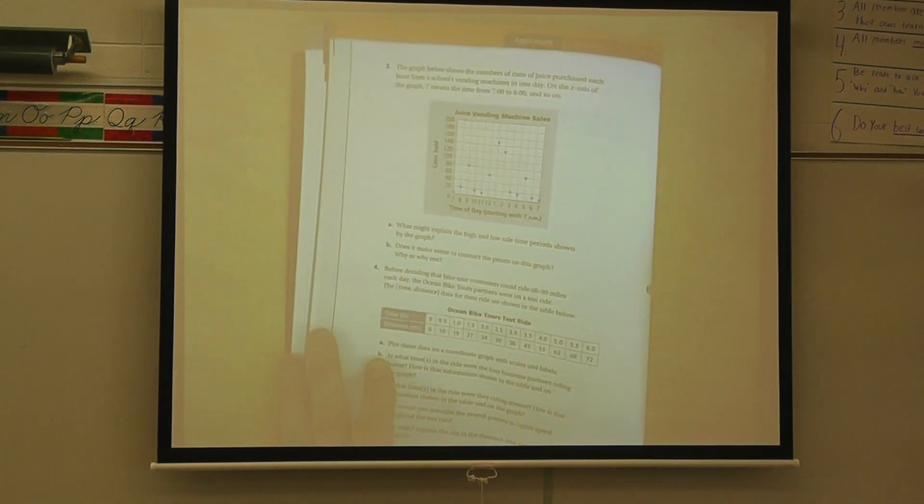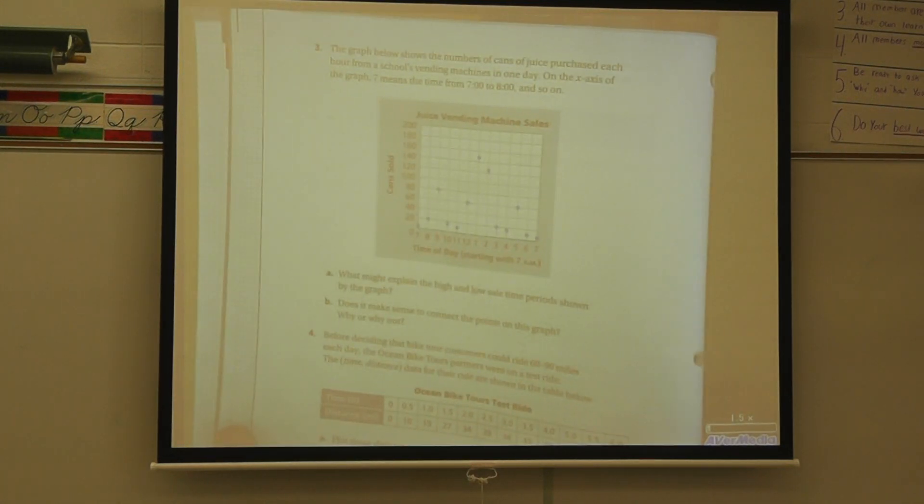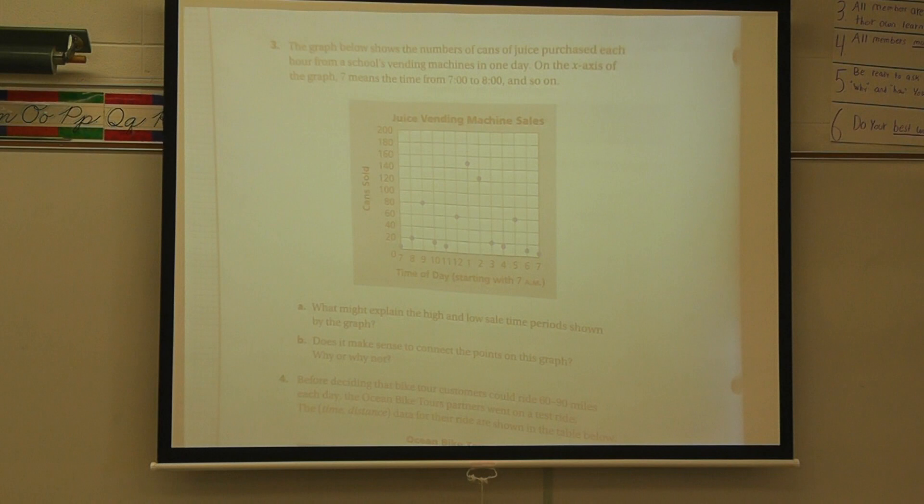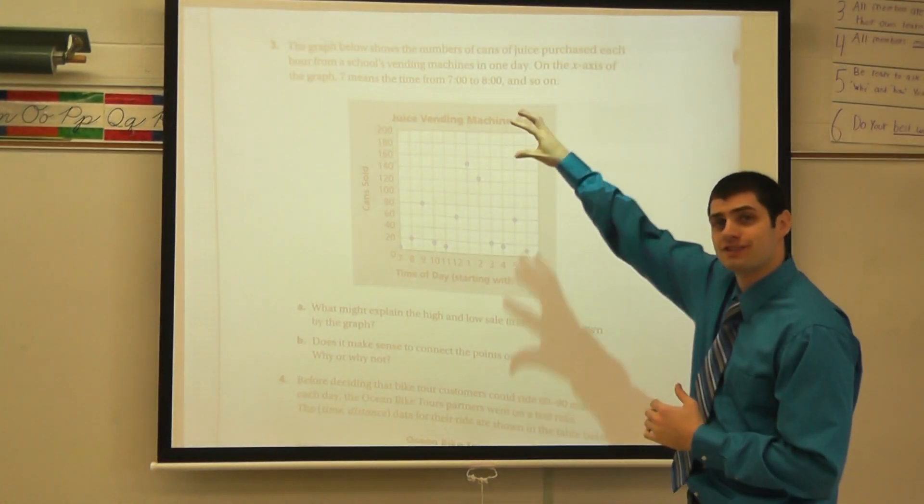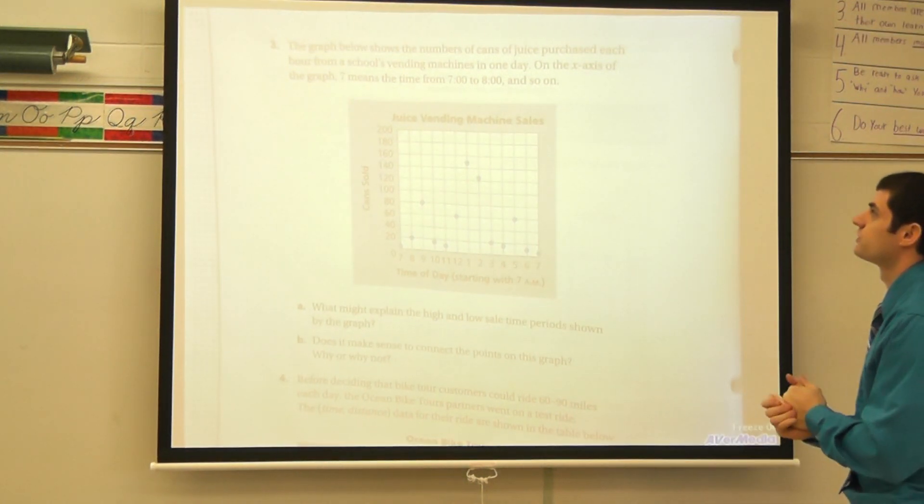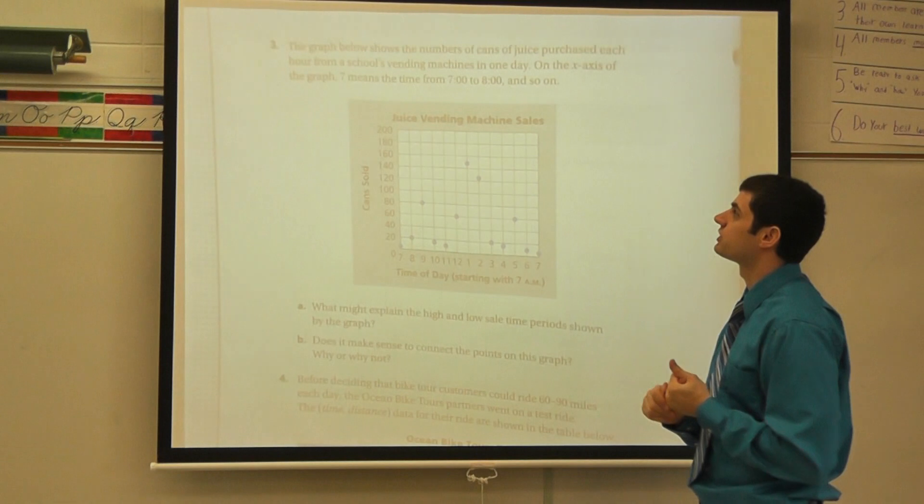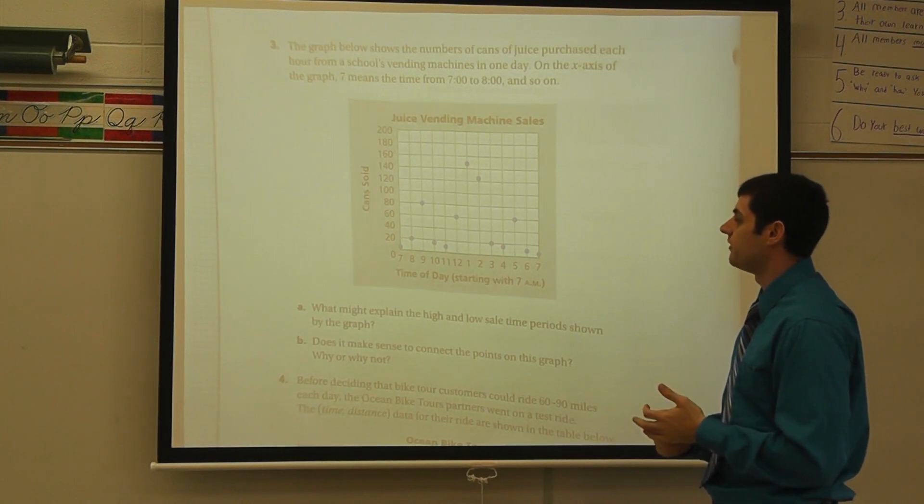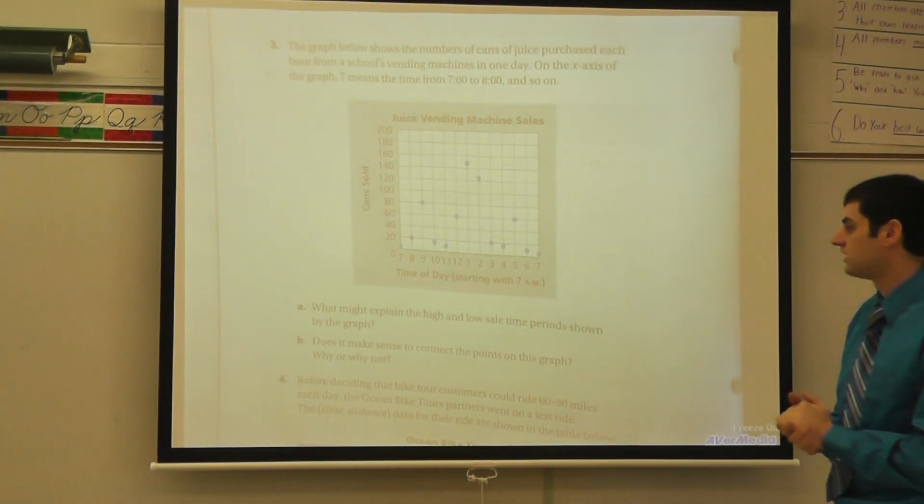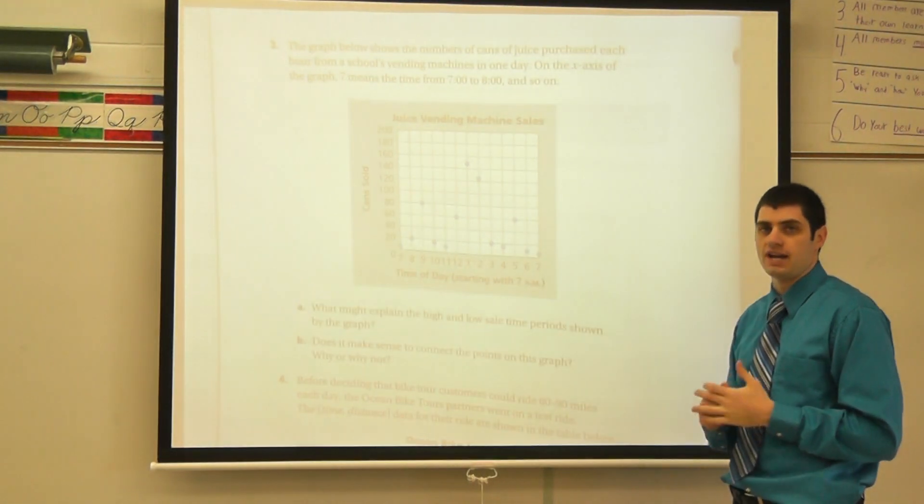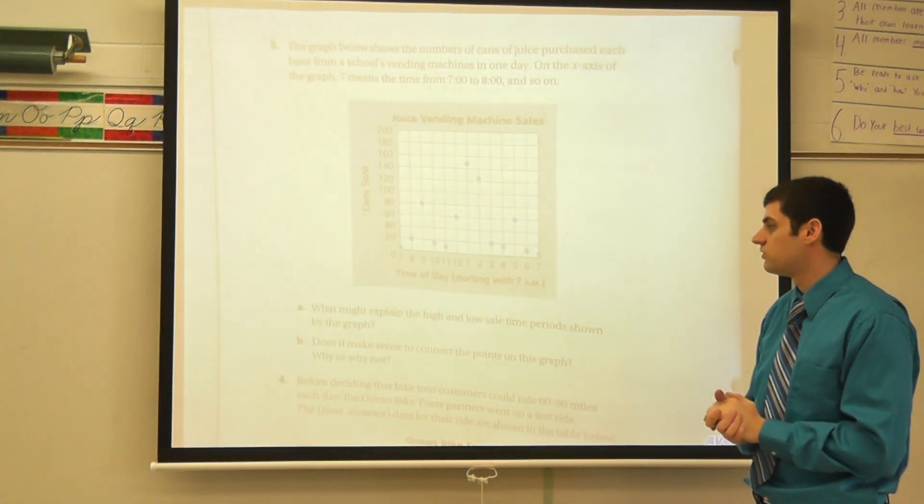And this one's going to have to deal a little bit with school. And this is actually going to be the one that you guys are going to have to do at home. Even though the little sign up top doesn't say your turn, it's definitely going to be your turn. Problem three. The graph below shows the numbers of cans of juice purchased each hour from a school's vending machines in one day. On the x-axis of the graph, 7 means from the time 7 to 8, and so on. A, what might explain the high and low sale time periods shown by the graph? B, does it make sense to connect the points on this graph? Why or why not? Go ahead and pause this video, and we'll see what you come up with.